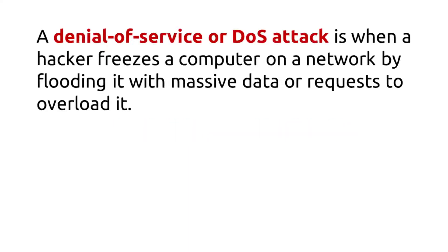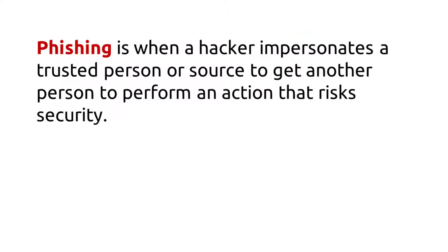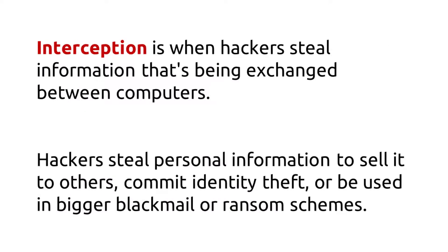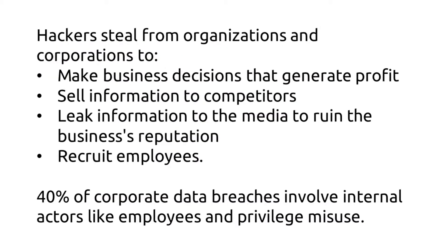Lesson Summary: A denial-of-service or DoS attack is when a hacker freezes a computer on a network by flooding it with massive data or requests to overload it. A distributed denial-of-service or DDoS attack is a type of DoS attack when many computers or devices are flooded at the same time. Phishing is when a hacker impersonates a trusted person or source to get another person to perform an action that risks security. Tampering is when hackers exploit or divert an organization's everyday activities. Interception is when hackers steal information that's being exchanged between computers. Hackers steal personal information to sell it to others, commit identity theft, or use it in bigger blackmail or ransom schemes.